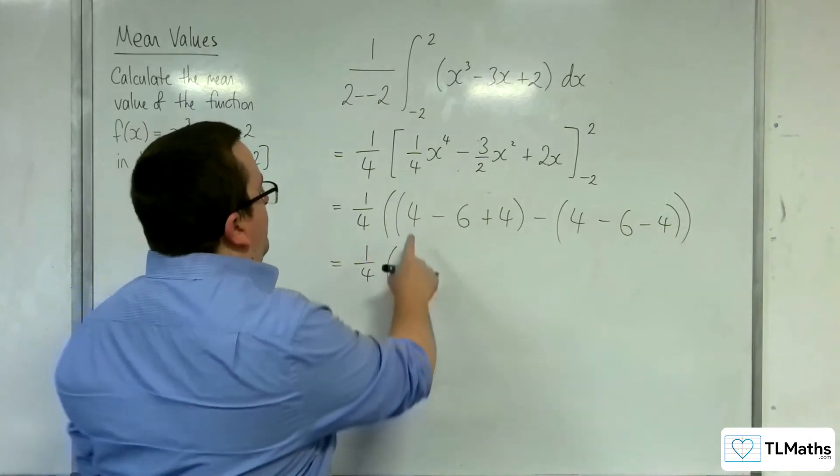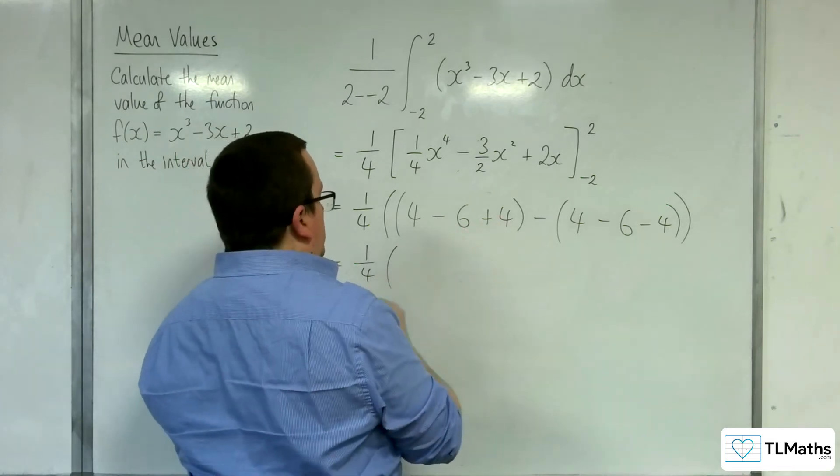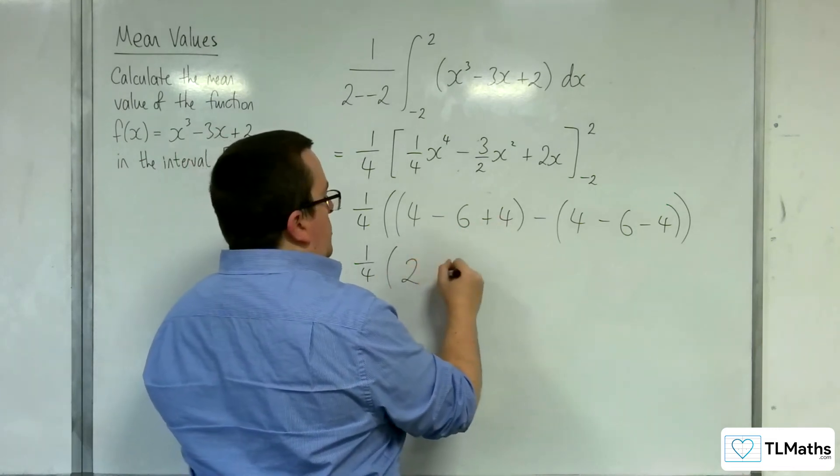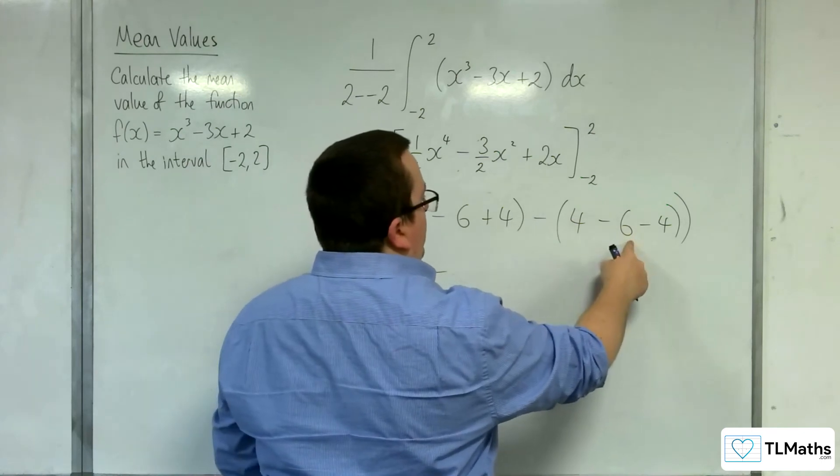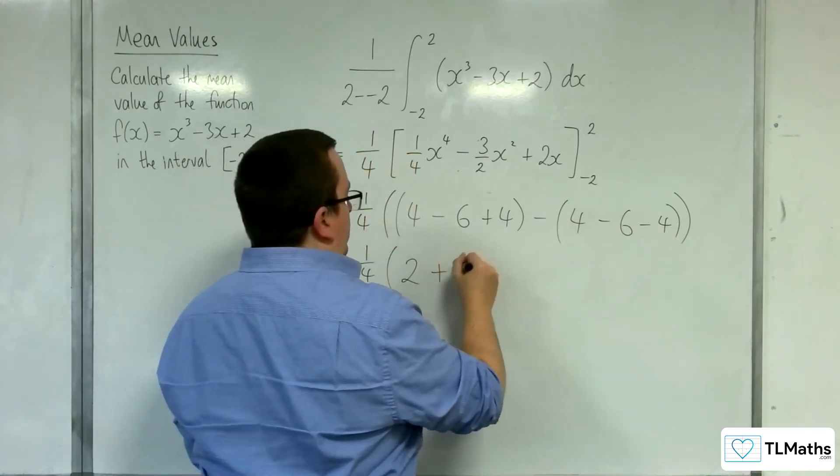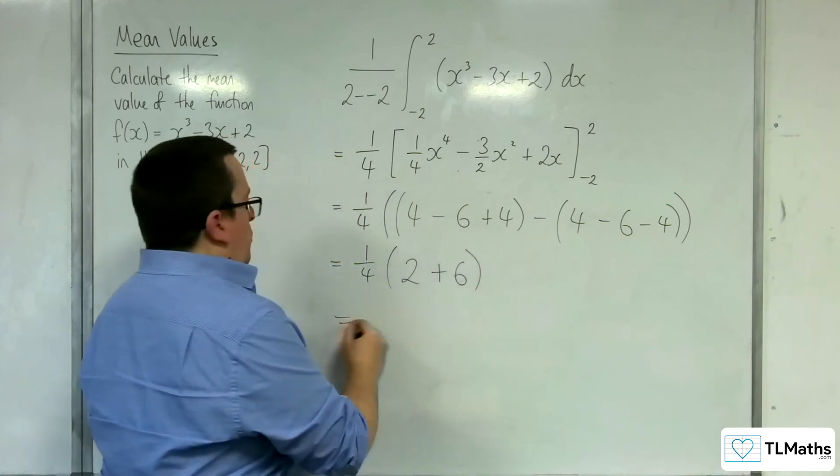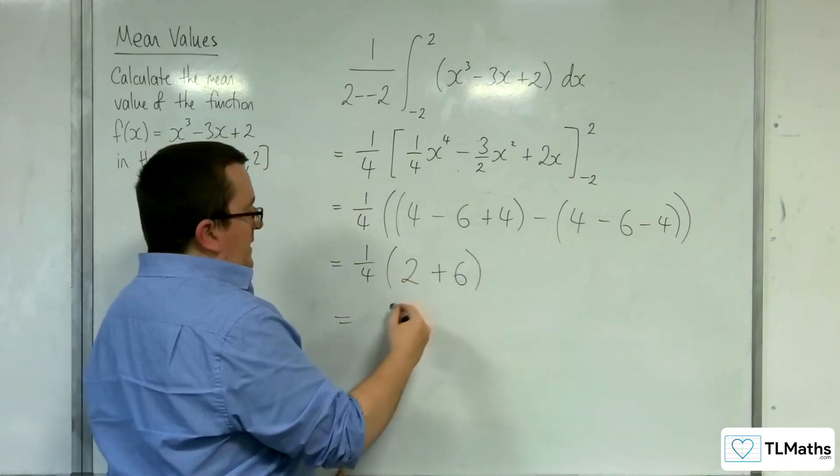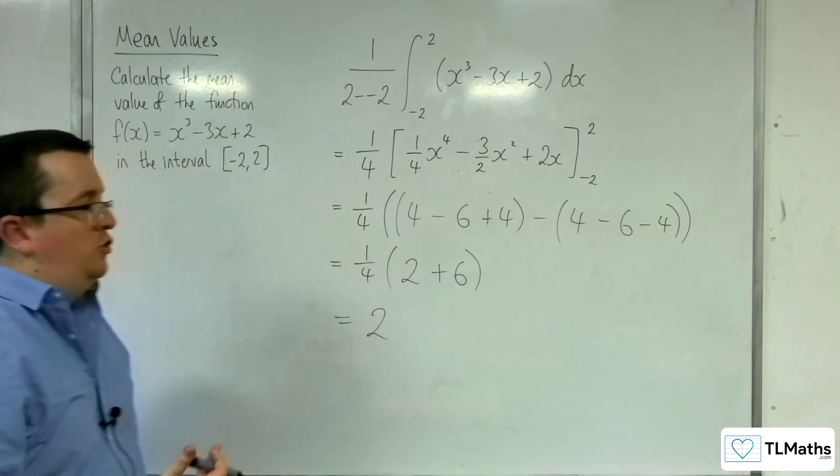So what we've got, 4 take away 6 is -2 plus 4 is 2. So we've got 2 take away, 4 take away 6 is -2, take away 4 is -6, so plus 6. So we've got 1 quarter times by 8, and so the answer is just 2.